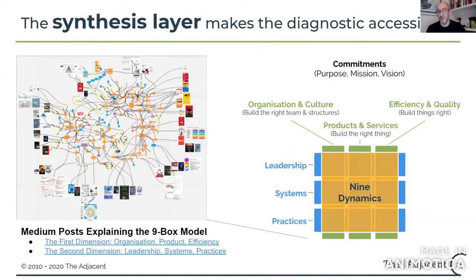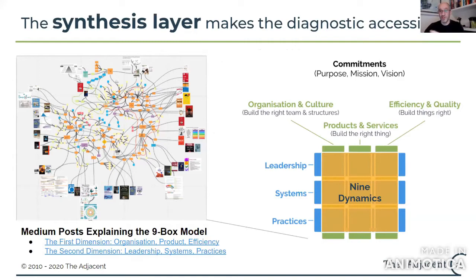With nine boxes we can go into an organization and figure out whether each one is working — or whether there are pieces that are substandard or where we could progress — and use that to think about where we should invest.